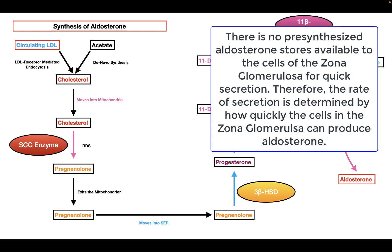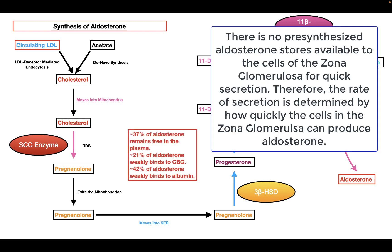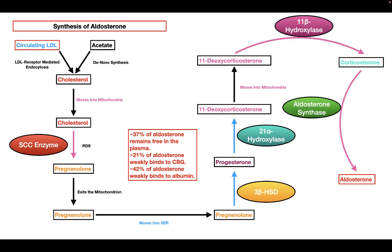Once aldosterone is in the blood plasma, it can either remain free or bound to protein. Around 37% of aldosterone remains free in the blood plasma. Of the remaining aldosterone, 21% weakly binds to cortisol-binding globulin, and the remaining 42% weakly binds to albumin.